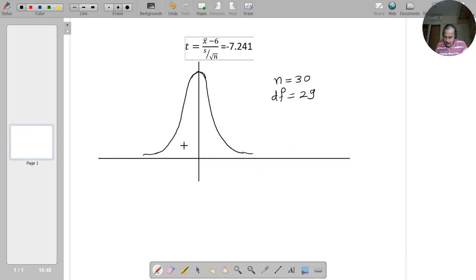What we do is we locate this particular figure on this particular graph. This figure is minus 7.24, so this figure can be located somewhere here.